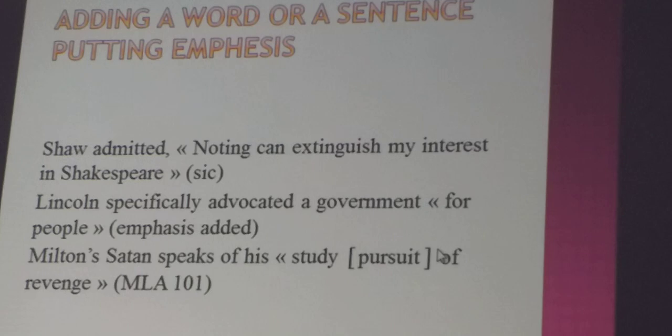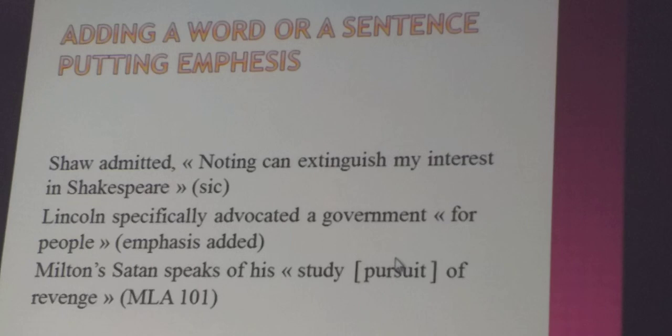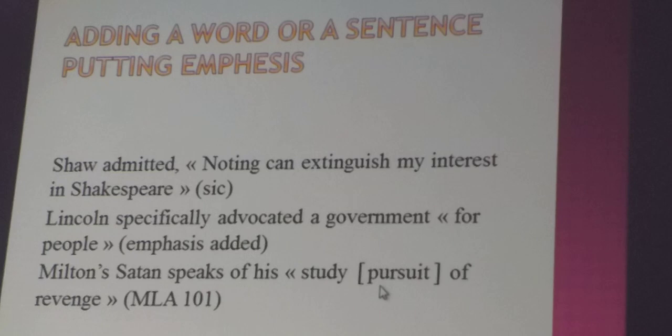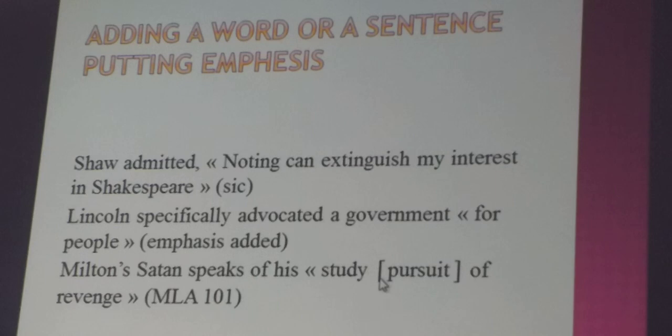When you want to add something to a quote, you put it between square brackets. For example, in 'Milton, Satan speaks of his study,' a word is added within the quote — placed in square brackets, not parentheses — to emphasize or attract the reader. Square brackets signal to the reader that something has been added to the original text. This rule is taken from MLA page 101.